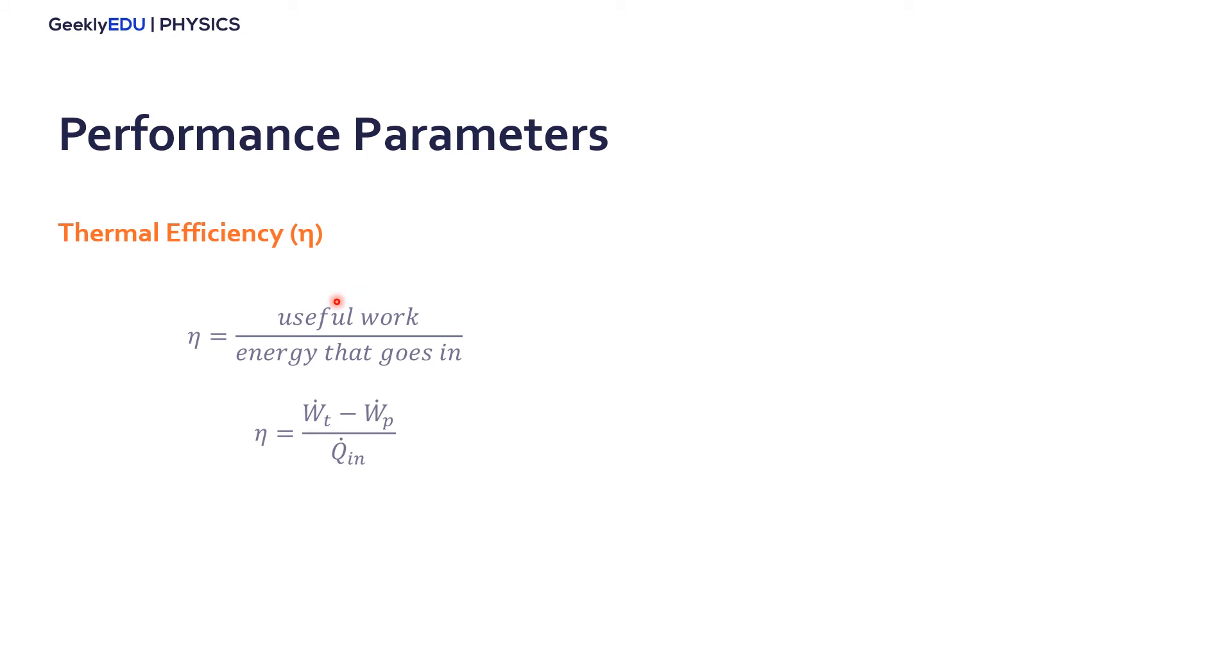So the useful work, or the network, for our system is actually the turbine minus the pump, the work of the pump, divided by the energy, the heat transferred in the boiler. So we can use the formulas we've seen before in this formula here to calculate the thermal efficiency. So we basically have the differences in enthalpies for the turbine, the pump, and the boiler.